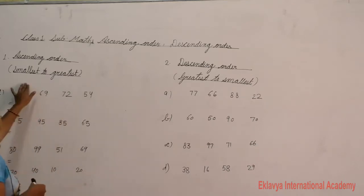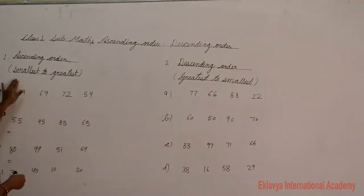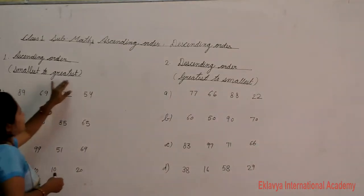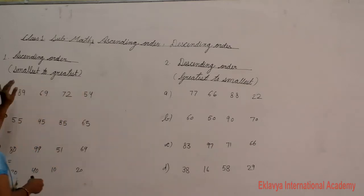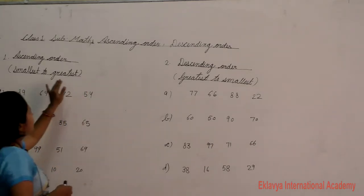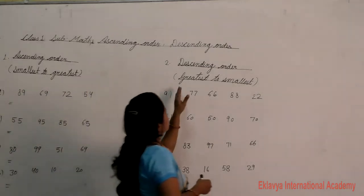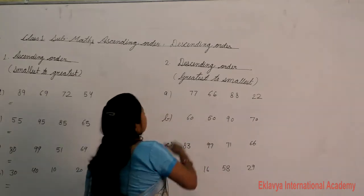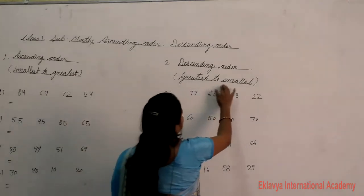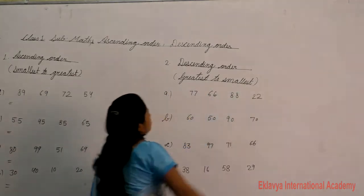Ascending order means we start from the smallest to the greatest number. Descending order means we start from the greatest to the smallest number.